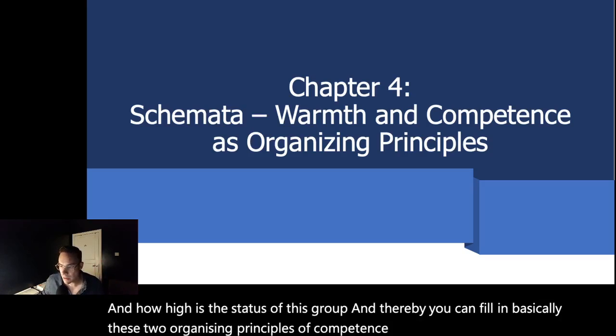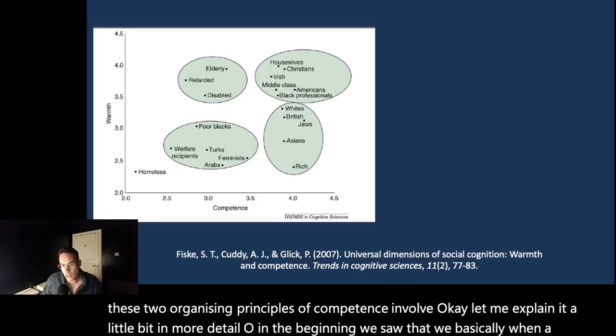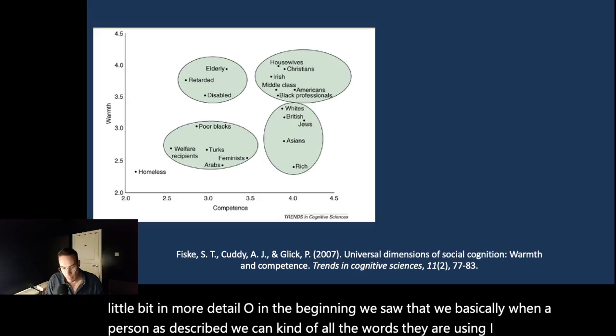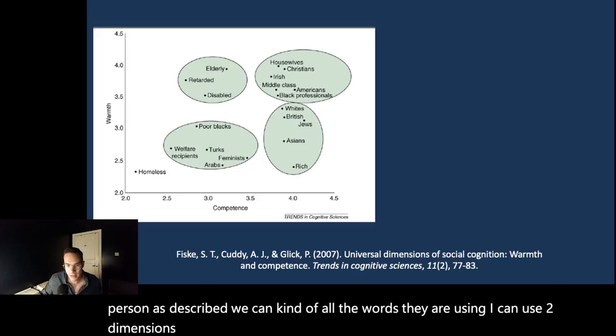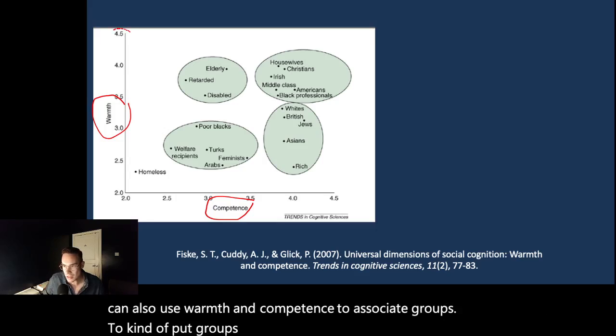Let me explain that in more detail. So in the beginning we saw that when a person is described, we can use two dimensions, warmth and competence, to organize them. We can also use warmth and competence to associate groups and put groups on this diagram. So here's like I'm super warm, and here's I'm super intelligent.